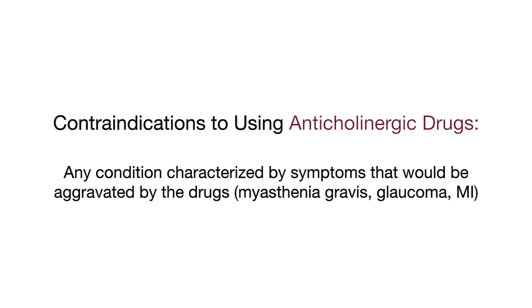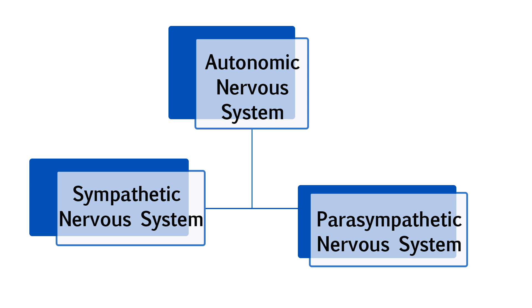Contraindications to using anticholinergic drugs include any condition characterized by symptoms that would be aggravated by the drugs, such as myasthenia gravis, glaucoma, or an MI. Let's go over a quick review. The autonomic nervous system is broken down into the sympathetic and parasympathetic nervous system. The sympathetic nervous system is the fight-or-flight response, or adrenergic, and the parasympathetic nervous system is the rest and digest response, or cholinergic, which has been our focus for this lesson.